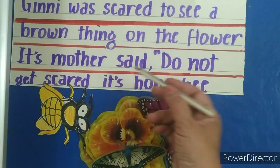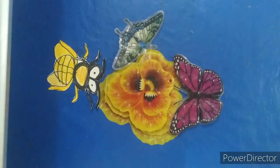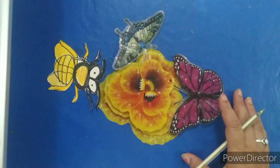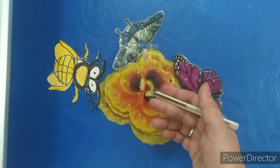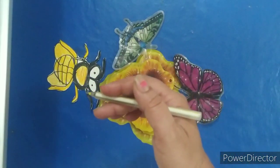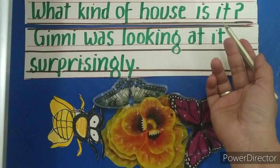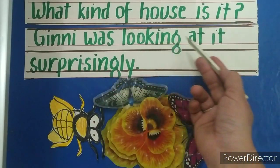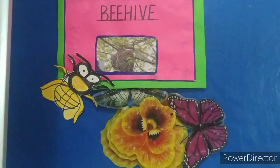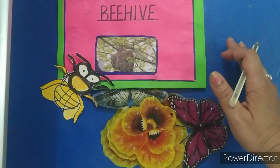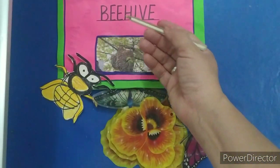Its mother said, 'Do not get scared. It is a honeybee. Like us, it has also come here to suck the nectar from the flowers. Look, there is her house.' What kind of house is it? Guinny was looking at it surprisingly. Honeybee said, 'Guinny, come, I will show you my house. It is called a beehive.'